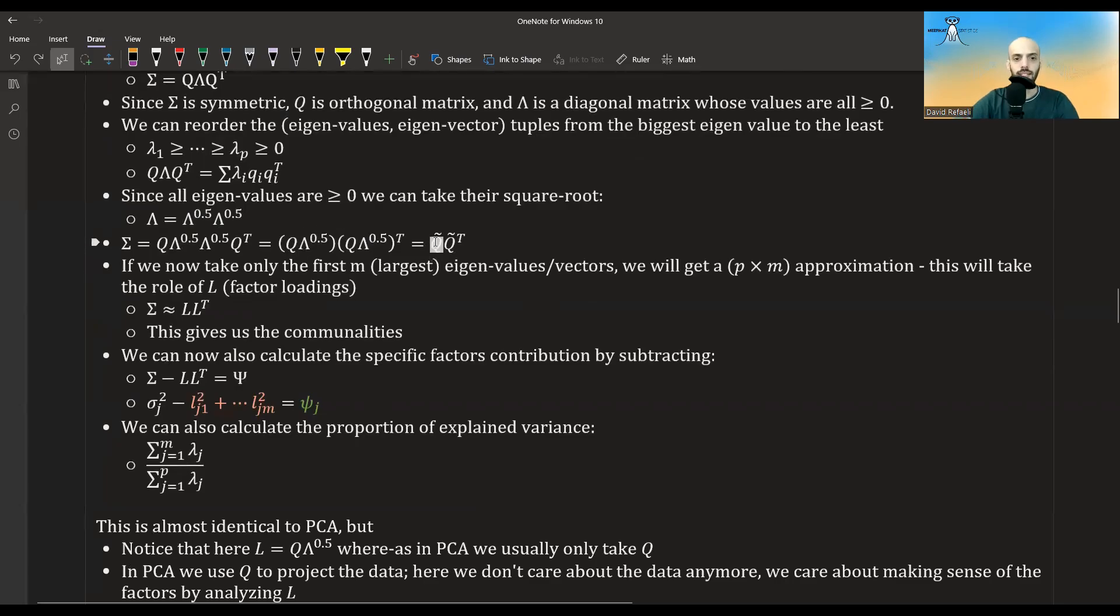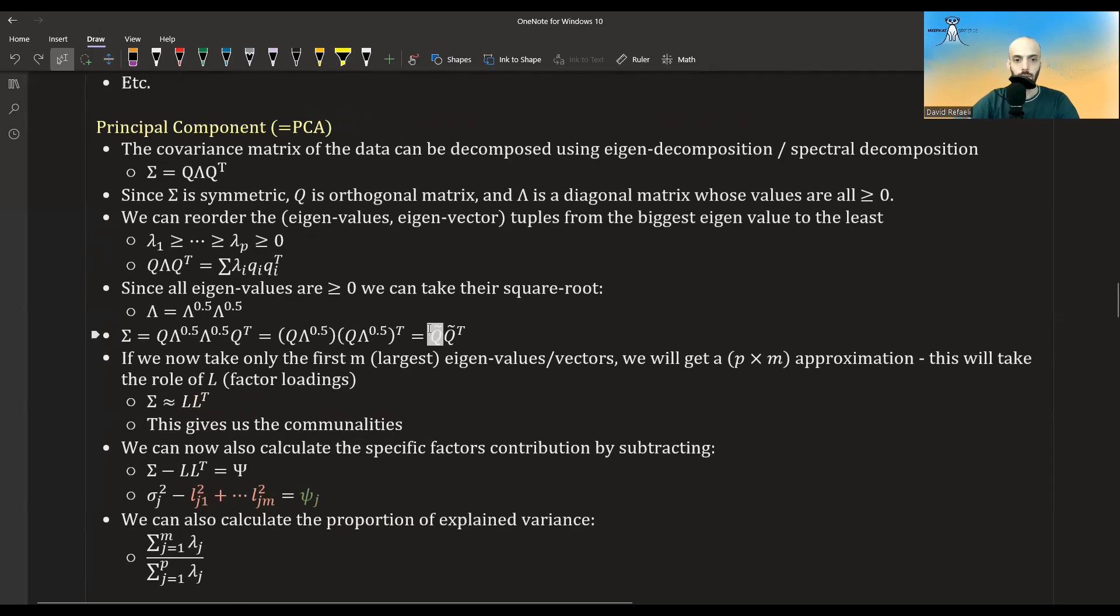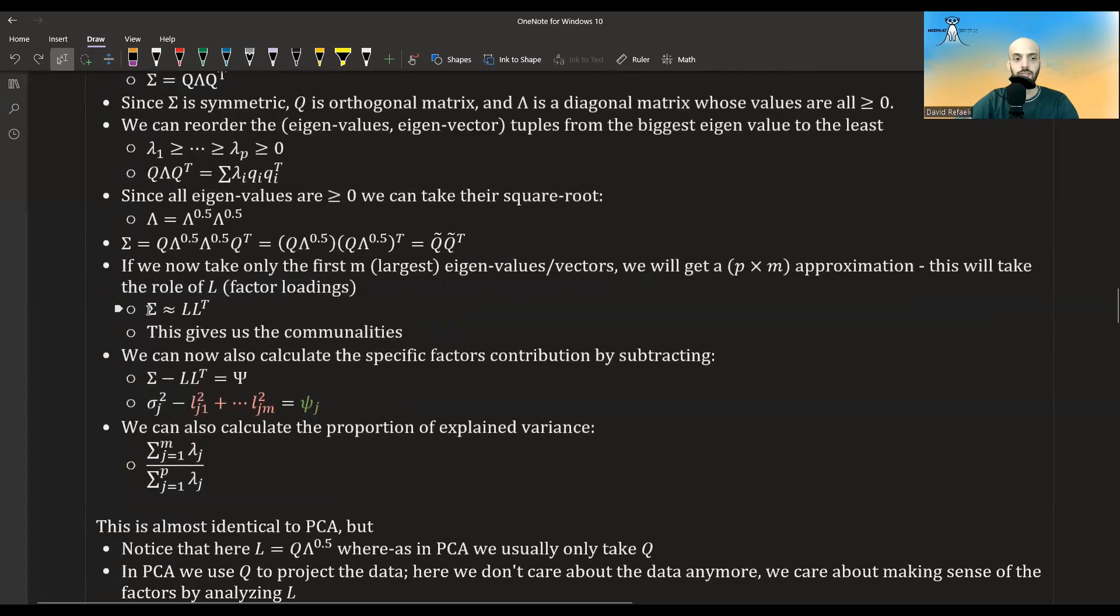Now, this is equal if we take all of the P columns of this Q tilde matrix. But what we could do, we could only take the first M columns, which are associated with the largest M eigenvalues. Yes, so we reordered Q such that the first columns will be corresponding to the largest eigenvalues. And then we will get an approximation. If we'll denote the reduced matrix by L, then this will be L times L transpose. And it won't be equal to the covariance matrix. It won't be equal to sigma, but it will be approximately.